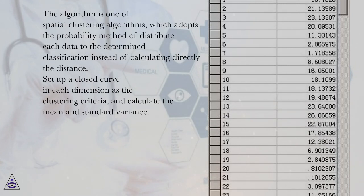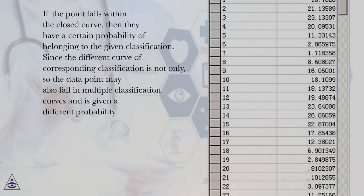Set up a closed curve in each dimension as the clustering criteria, and calculate the mean and standard variance. If the point falls within the closed curve, then they have a certain probability of belonging to the given classification. Since the different curve of corresponding classification is not only, so the data point may also fall in multiple classification curves and is given a different probability.